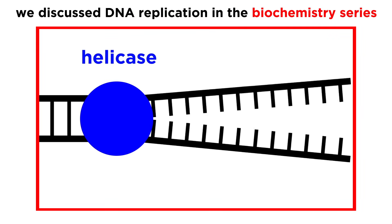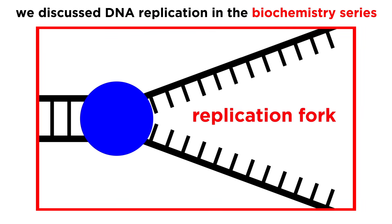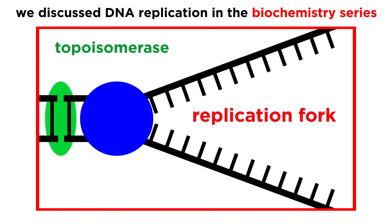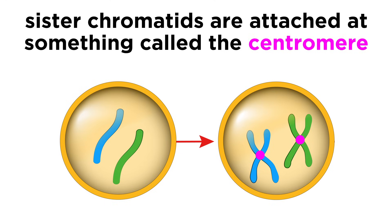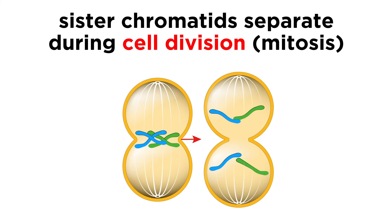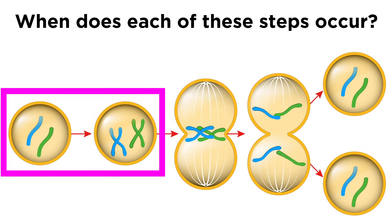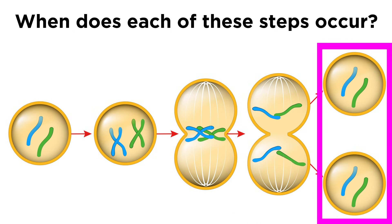To understand exactly how DNA replication works on the molecular level, check out my tutorial on the subject. Otherwise we can take for granted that at a certain point, all the DNA in a chromosome is copied, resulting in two identical sister chromatids. These are attached at the center by a centromere, with the chromosomal arms extending on either side. Later, when the cell divides, the sister chromatids will separate and get pulled into each of the two daughter cells. So when does the genome replicate, when does it get pulled apart, and when do we get two completely new cells?